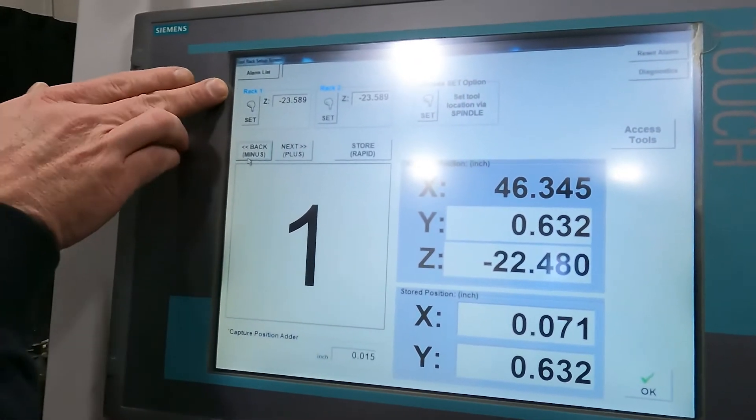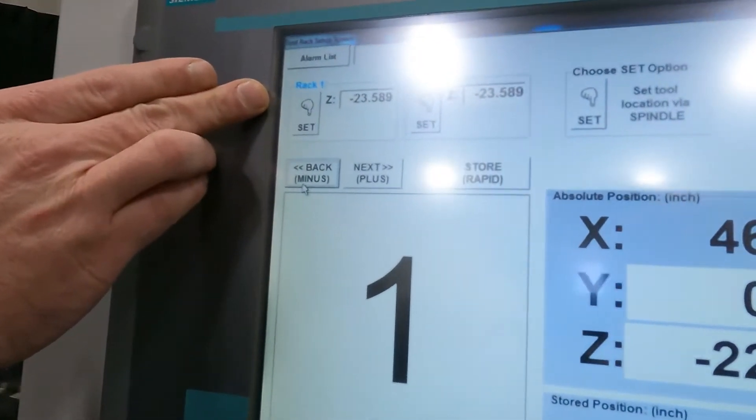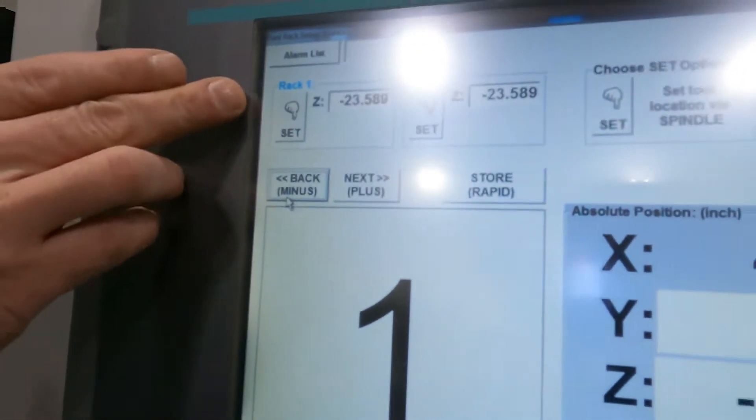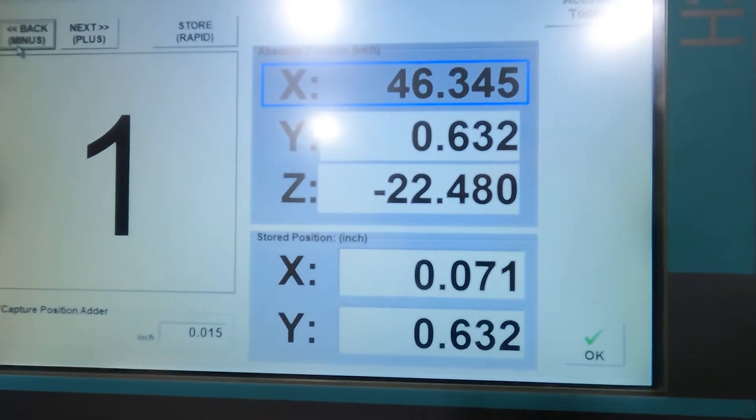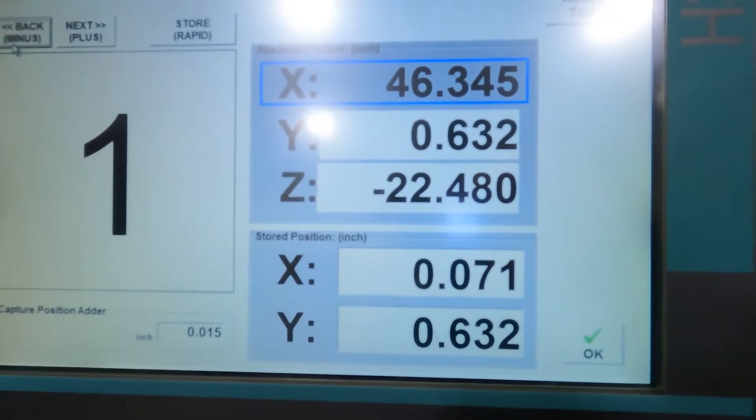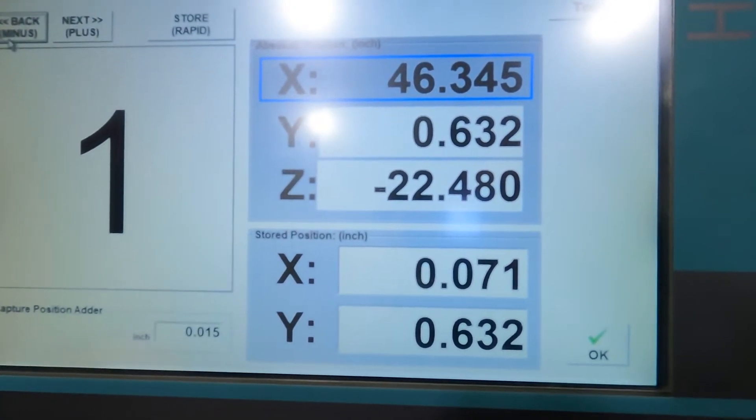So up here for Tool Rack 1, this is the Z position at negative 23.589. Select my Z.